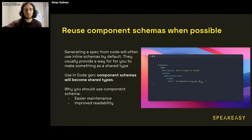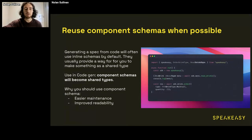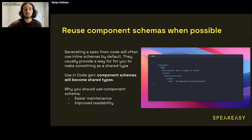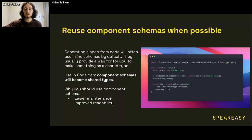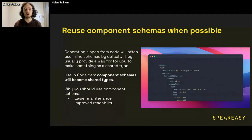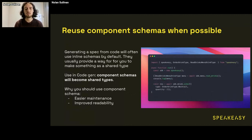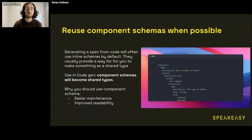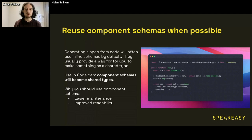Reusing component schemas when possible is really about making it easier to maintain your spec in the long run, but it also has a lot of bearing on code generation. If you're generating your spec from your API codebase, a lot of defaults will generate inline schemas for responses, which leads to duplicated objects that all represent really the same thing. If you use component schemas in your OpenAPI spec, if there are any changes to an object you can change it in one place and it'll automatically update. This makes your code more readable when you do code generation because everyone will be referring to that same object.